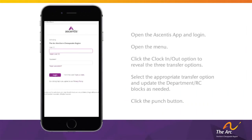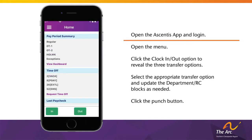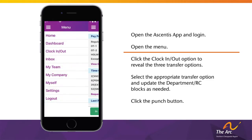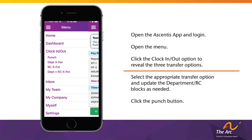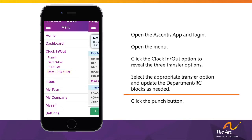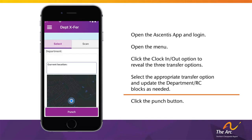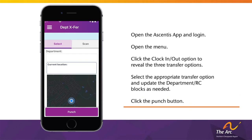The transfer process in Ascentus is the same on the mobile app but with a different layout. Open and log in to the Ascentus mobile app, open the menu in the top left corner, and click the Clock In/Out option. Note the three transfer options that drop down: a Department Transfer option for transferring to a different work location, an RC Transfer option for transferring to a different work role such as a training or team meeting, and a Department + RC Transfer option for situations such as cross-training where both work location and work role need to be updated. After clicking the appropriate transfer option, update the text block or blocks and click the Punch button.